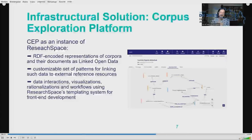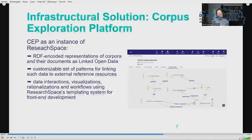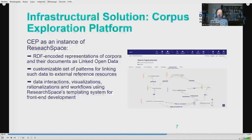ResearchSpace, and by extension CEP, aims to recreate dynamic relationships between objects and events. These relationships go beyond the tabular form of a relational database and are semantic in nature. Like any other project implemented with ResearchSpace, CEP uses an ontology as a framework for representing knowledge in the form of structured but multi-dimensional information. The ontology is stored using a graph database containing RDF-encoded representations of corpora and their documents as linked open data.